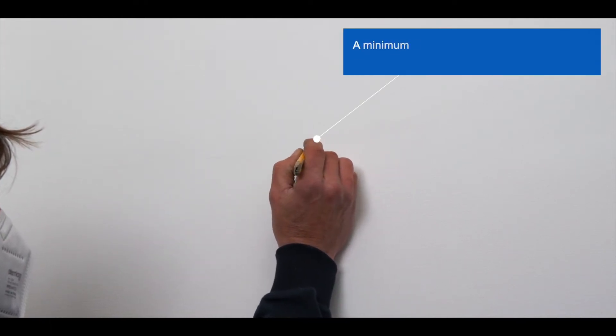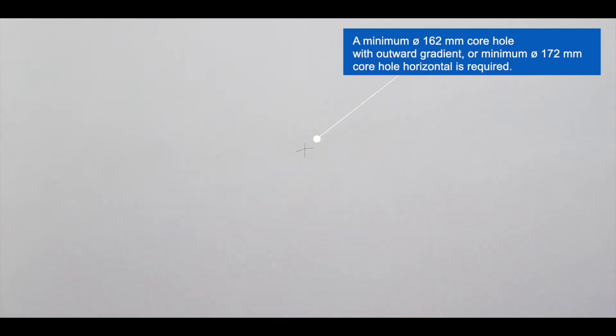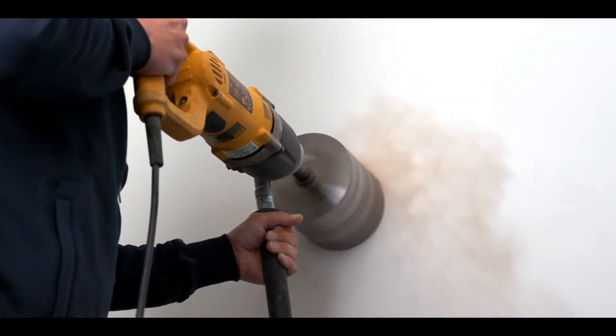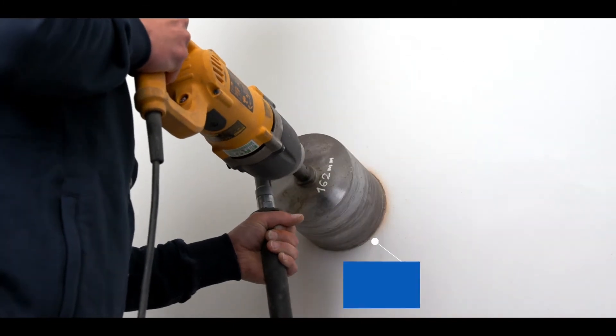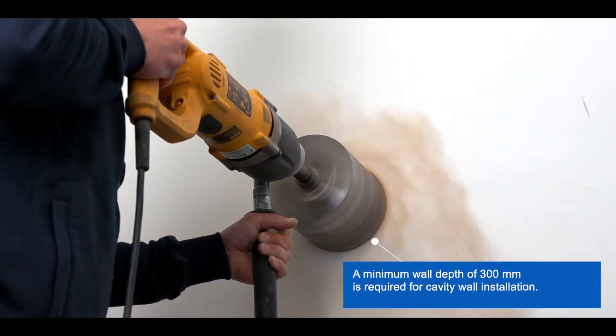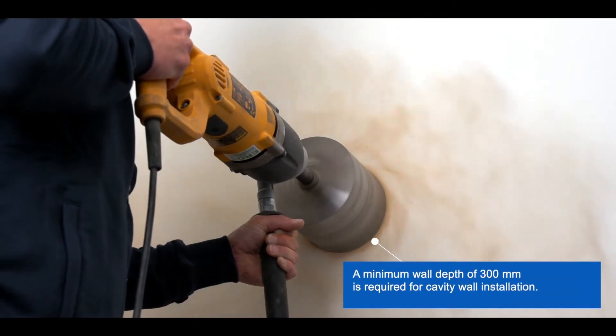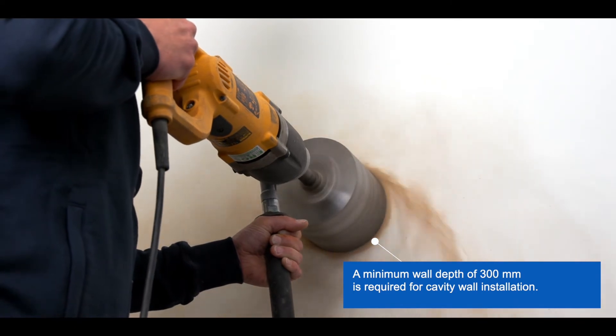A minimum 162 millimeter diameter hole is required to install this unahab unit at an outward gradient, or a minimum 172 millimeter diameter hole straight. A minimum wall depth of 300 millimeters is required for cavity wall installation.